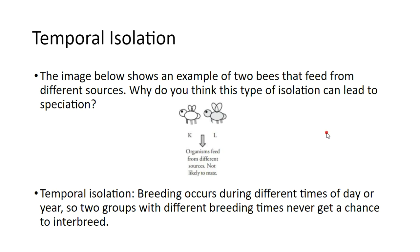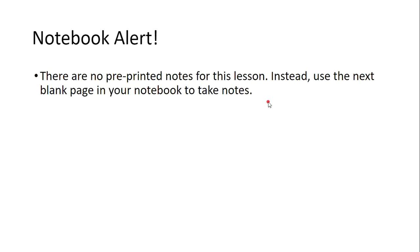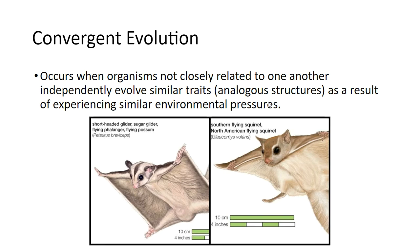That's it for our speciation notes, covering the four types: geographic isolation, behavioral isolation, mechanical isolation, and temporal isolation. Now let's take a look at our patterns of evolution notes — packet page 118. Convergent evolution occurs when organisms not closely related to one another independently evolve similar traits, called analogous structures, as a result of experiencing similar environmental pressures.